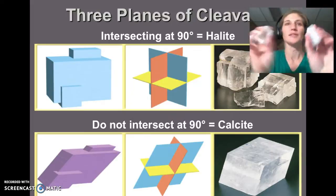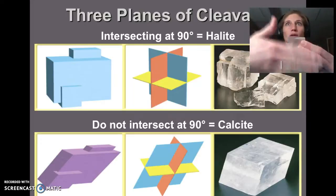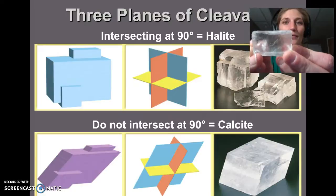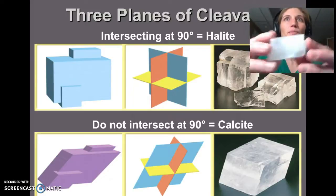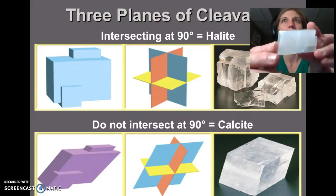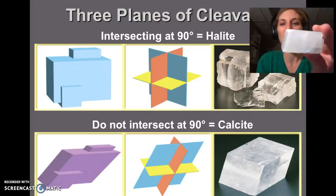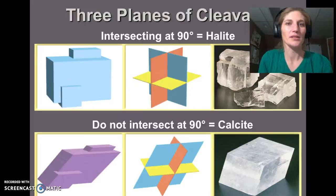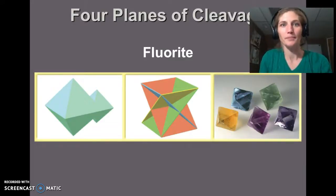Three planes of cleavage: compare sample 2 and sample 6. Sample 6 has three planes meeting at 90 degrees — if broken with a hammer it makes little cubes. Sample 2 also has three planes but they meet at not 90 degrees, giving it a rhombic shape. Use a hand lens to zoom in and look at the edges to see the angle difference more clearly. Some minerals like fluorite have four planes of cleavage.